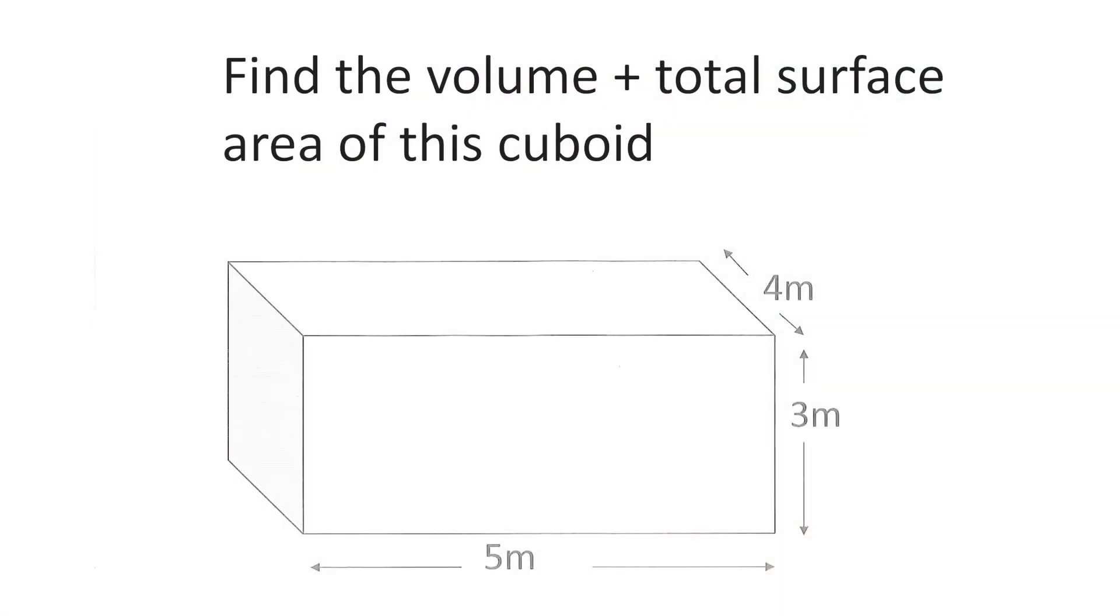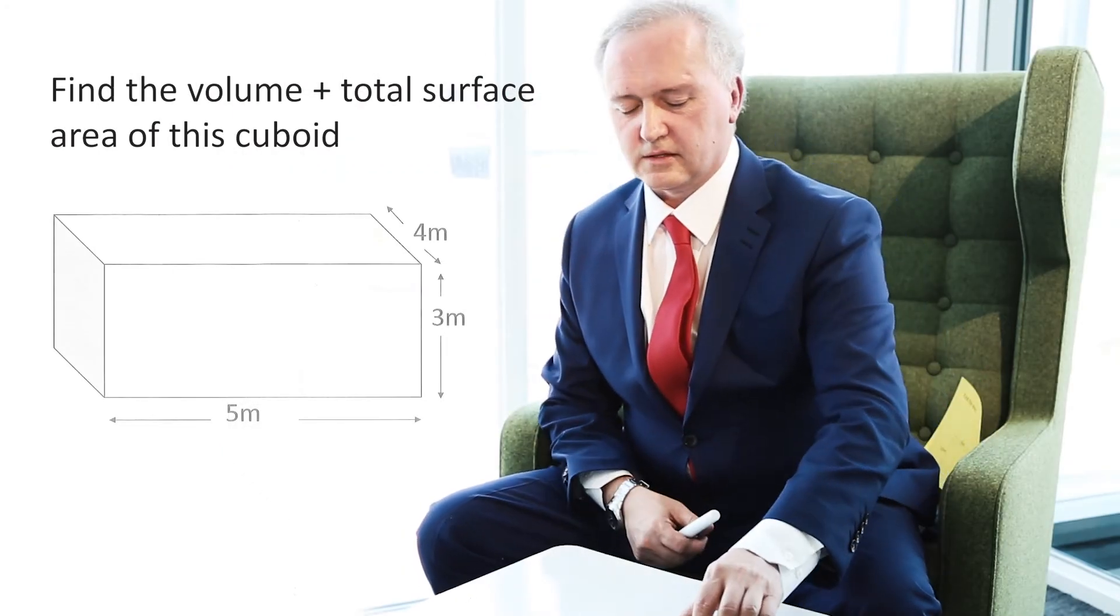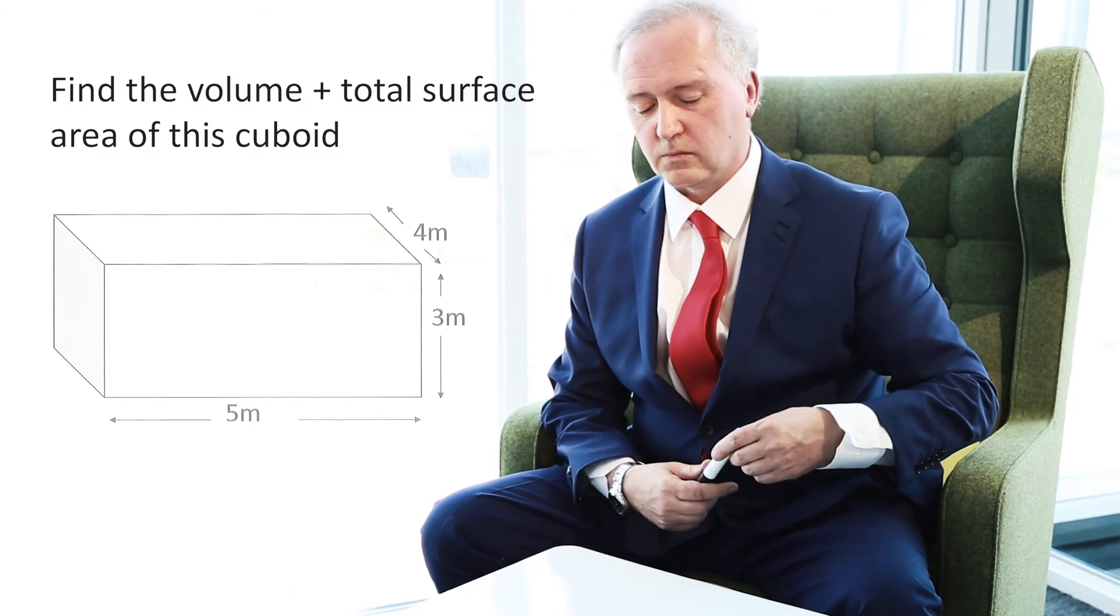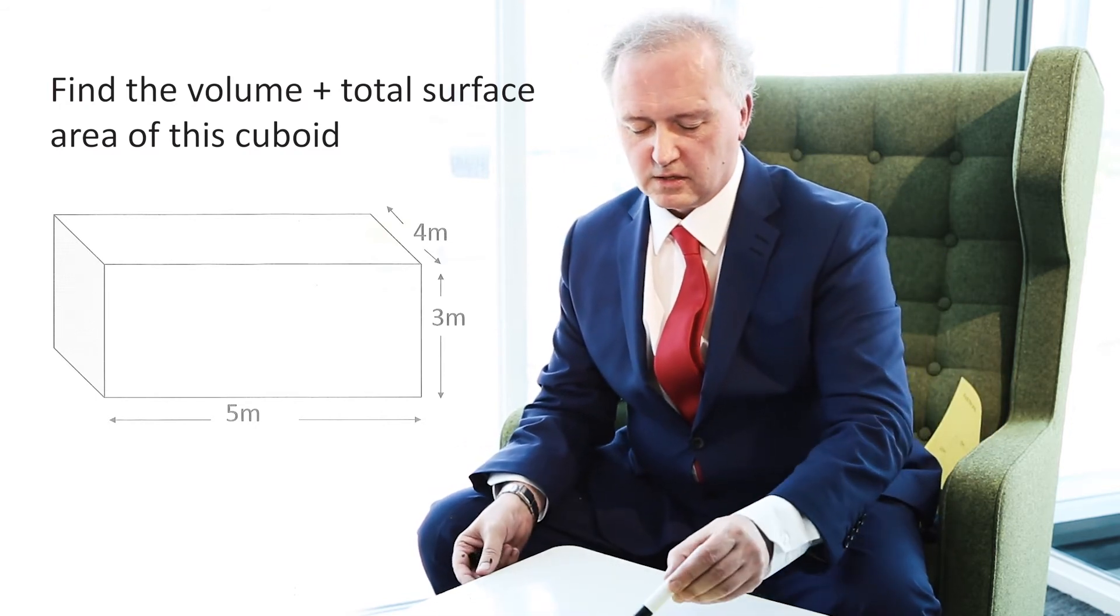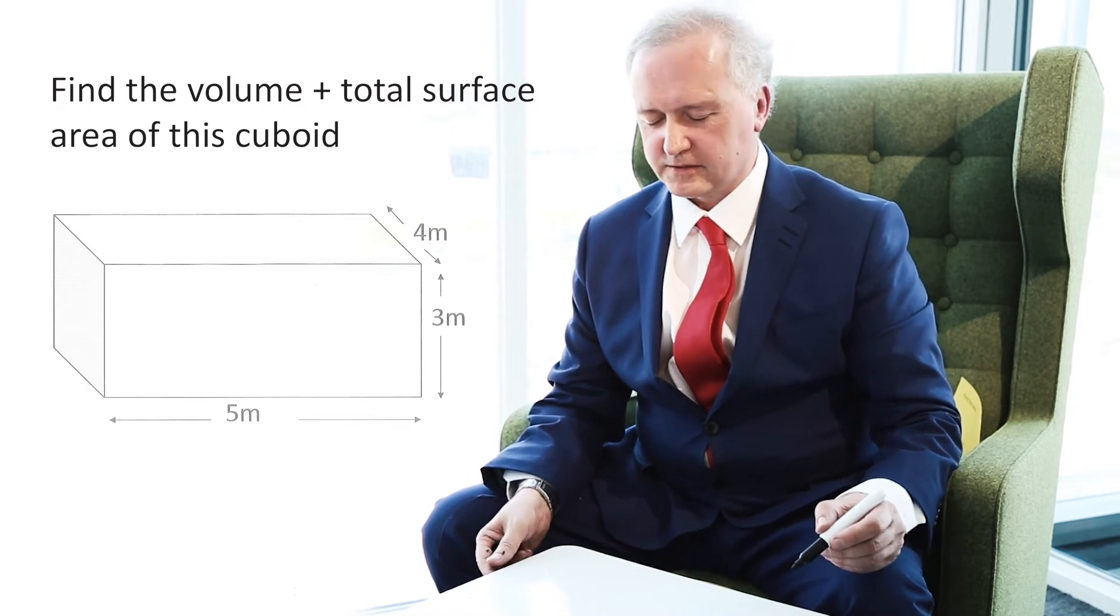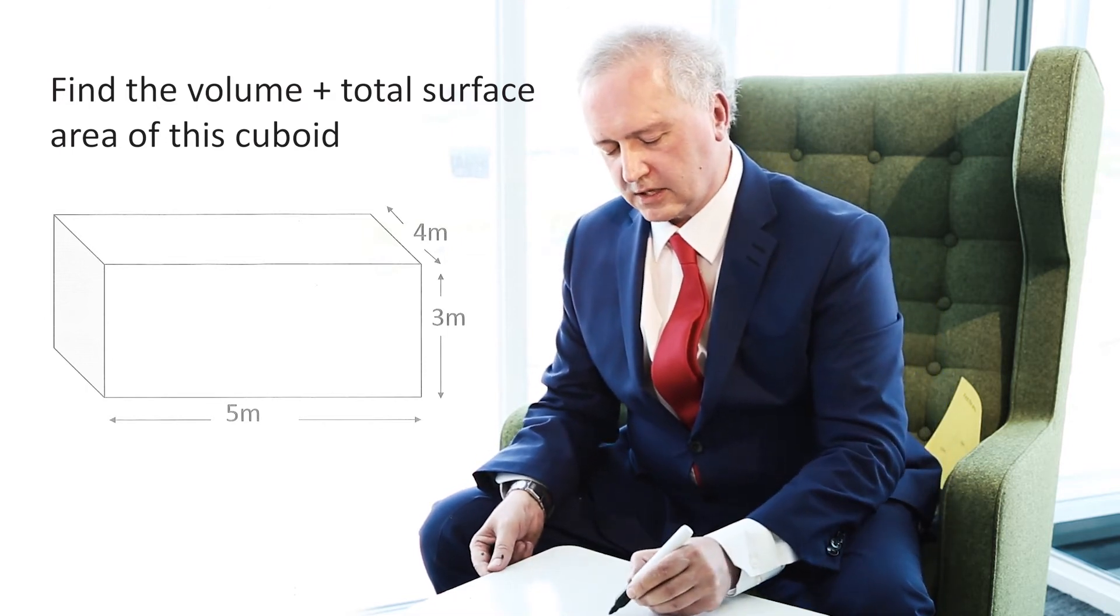So what I need to do in this case is I need to consider the fact that I have six faces. And if I look at the front face, the one that's looking at me now, I can see that the total surface area of that face is 5 metres by 3 metres.